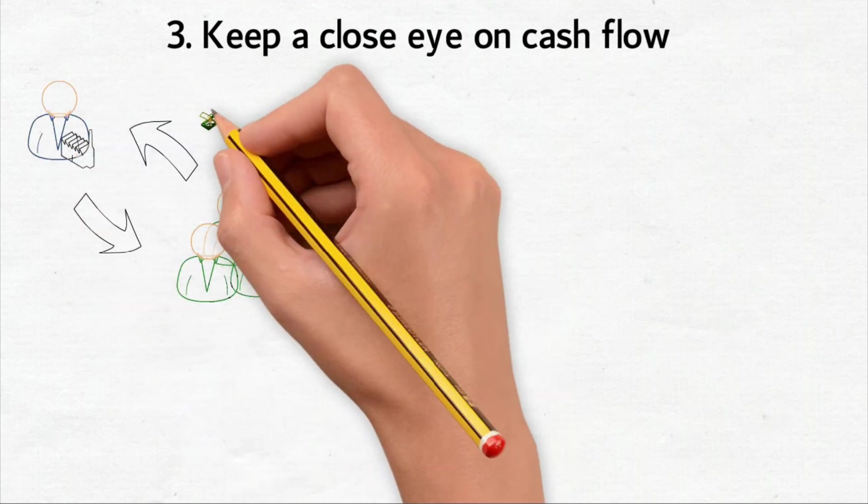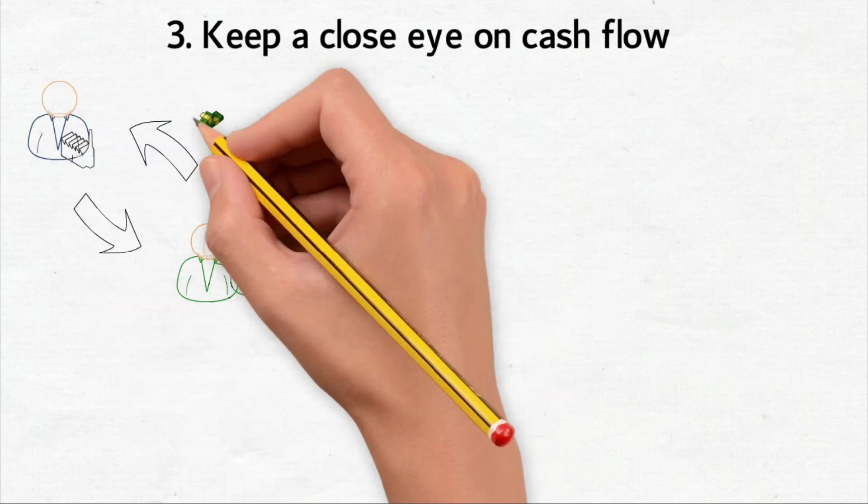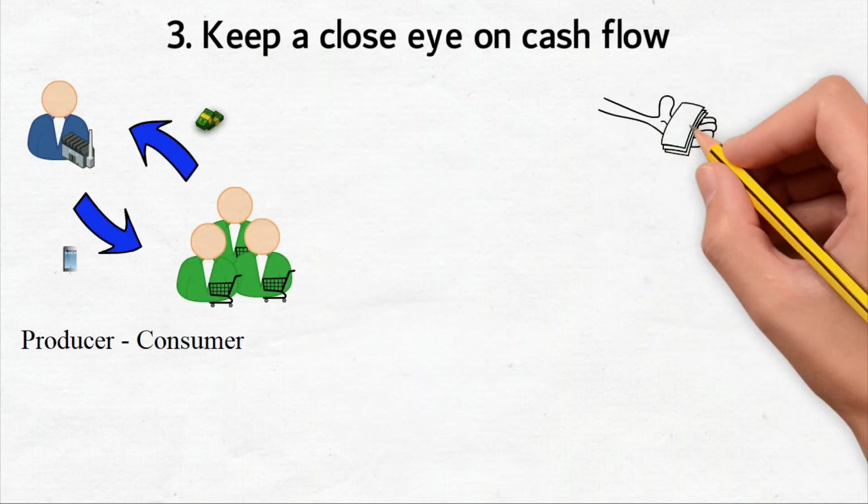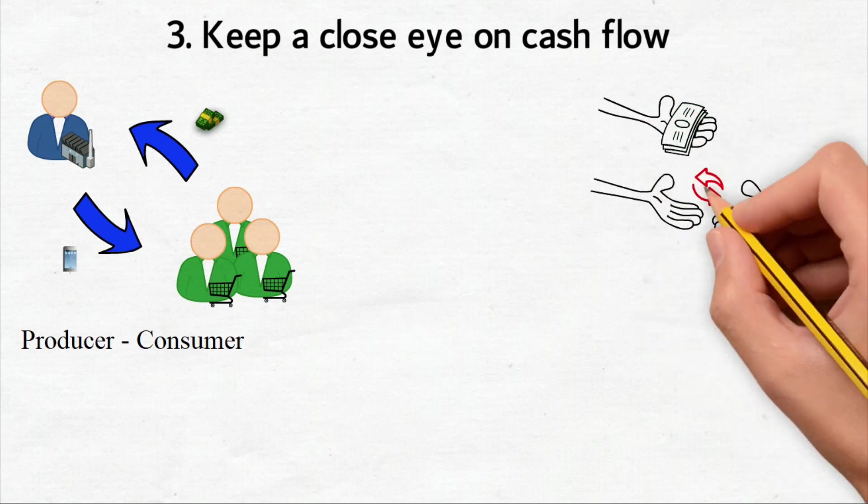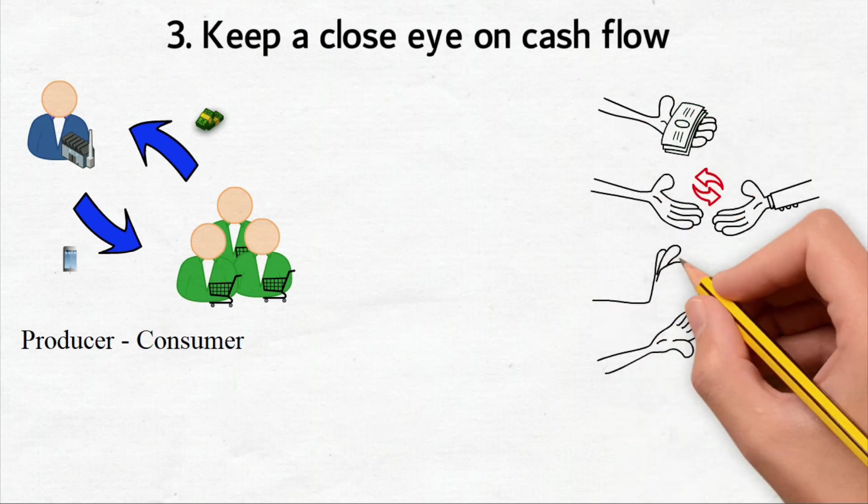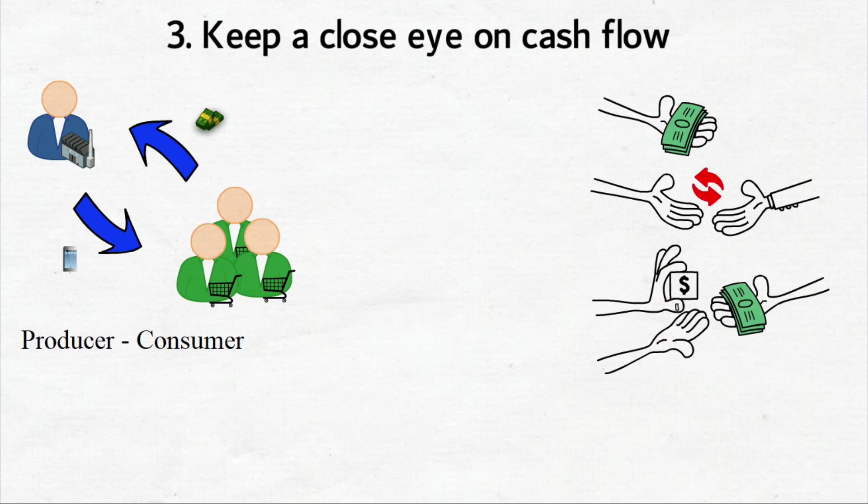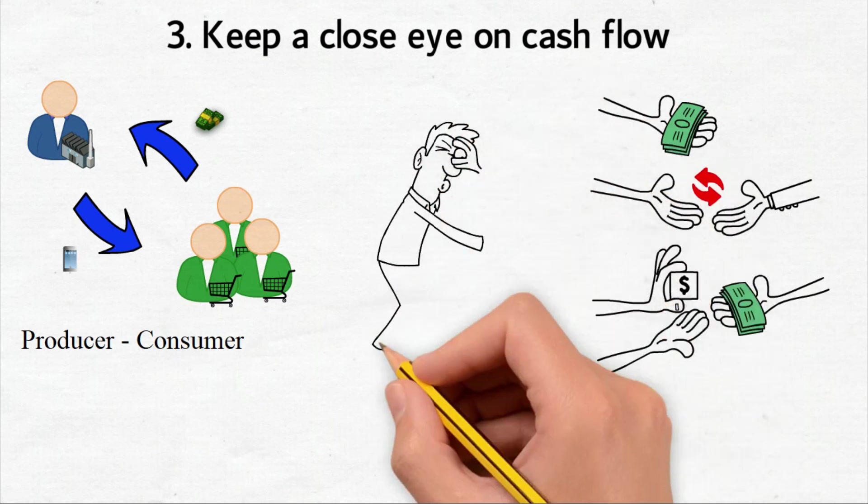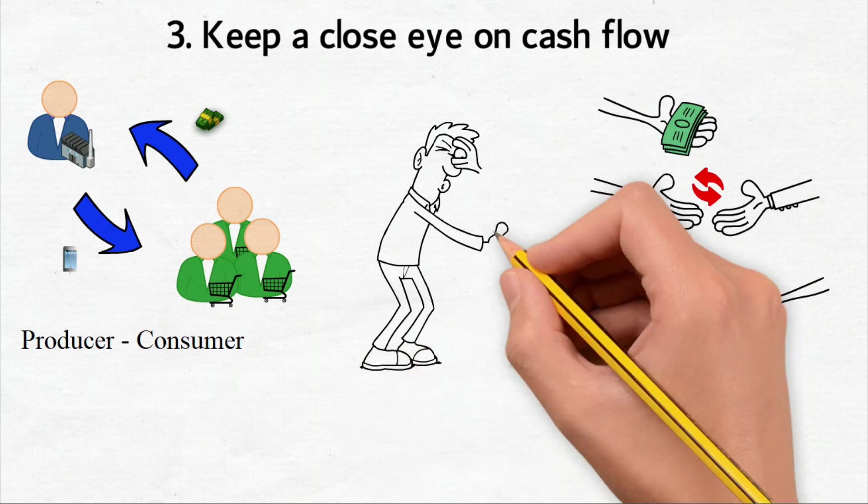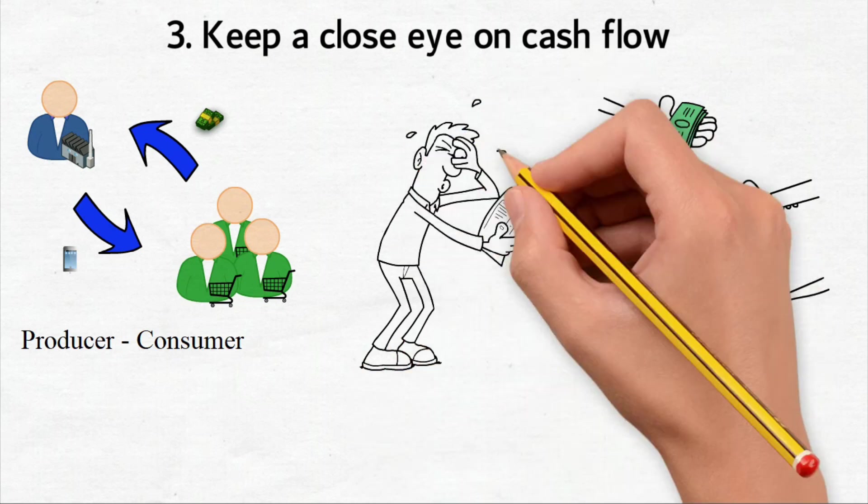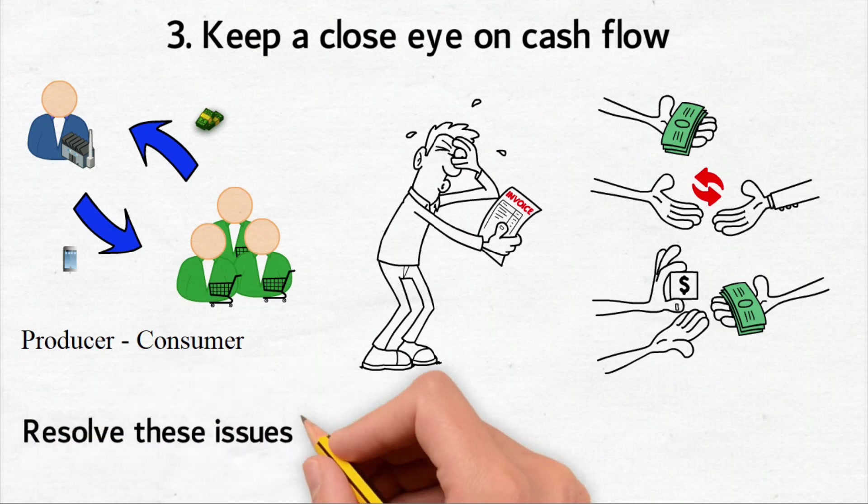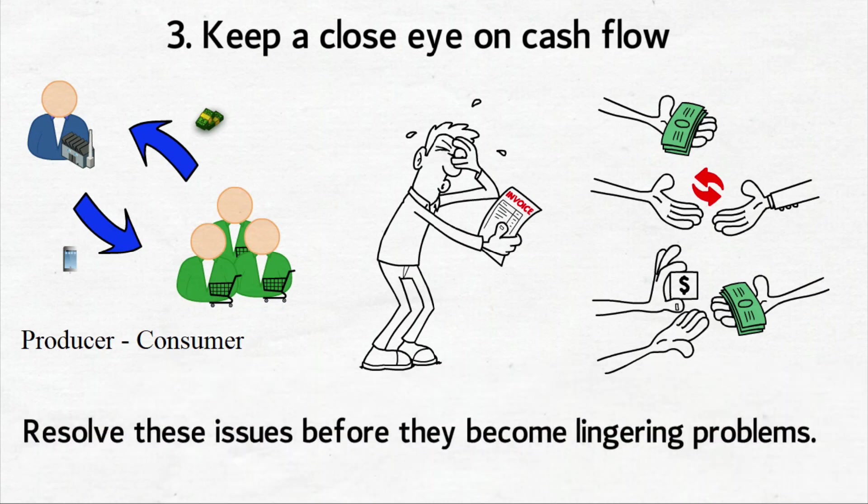Keep a close eye on cash flow. Consumers save more and spend less in a recession, meaning businesses might generate lower revenues on products or services. Managing your business's cash flow is critical during times of uncertainty and many small businesses fail because they do not control it properly. One way to protect your cash flow is to send out invoices and review your receivables promptly. In doing so, you might notice that some clients consistently make overdue payments or are obviously overdue. Resolve these issues before they become lingering problems.